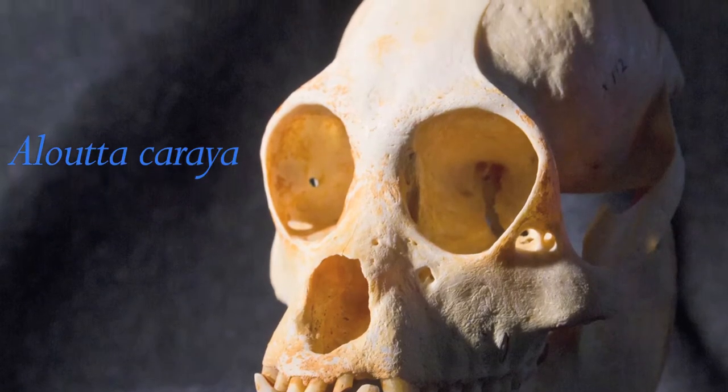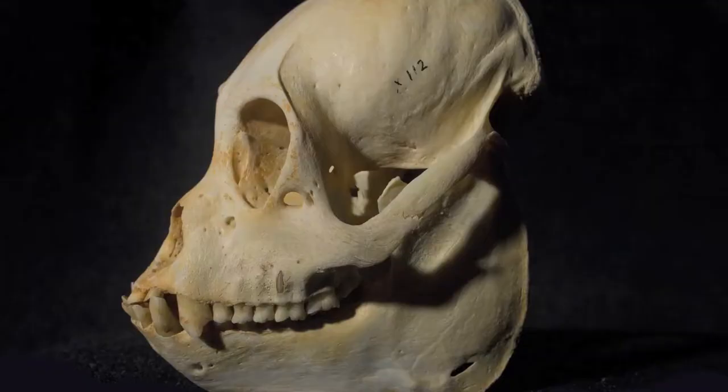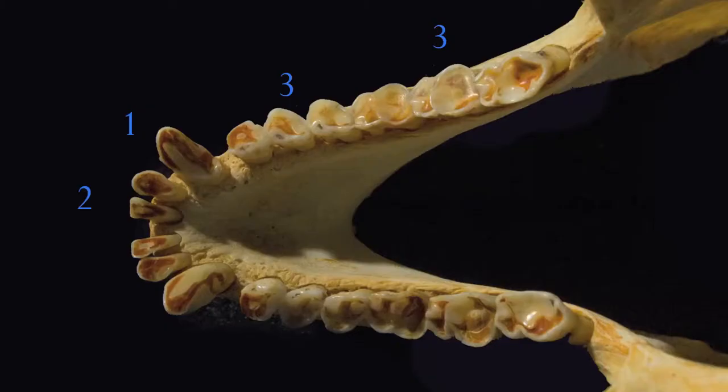This is the skull of a howler monkey. Let's look at the New World Monkey dental formula. You can see two incisors, one canine, three premolars, and three molars.